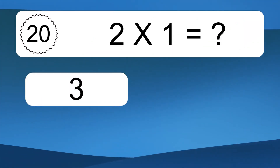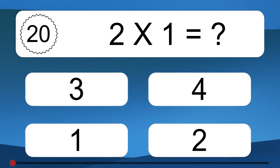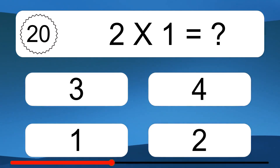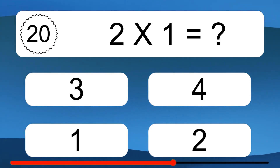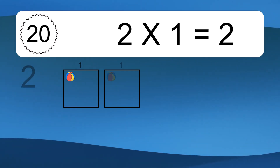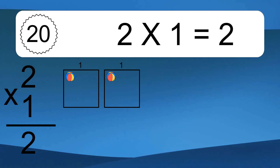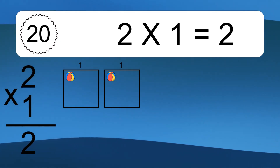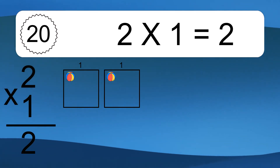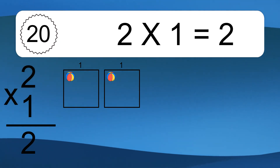2 times 1 equals what? 2 times 1 equals 2. We have 2 boxes, and each box has 1 colorful ball inside. If you count all the balls in all the boxes together, you will have 2 times 1 balls. This equals 2 balls.